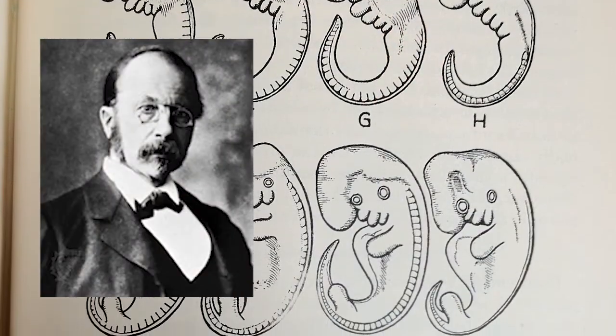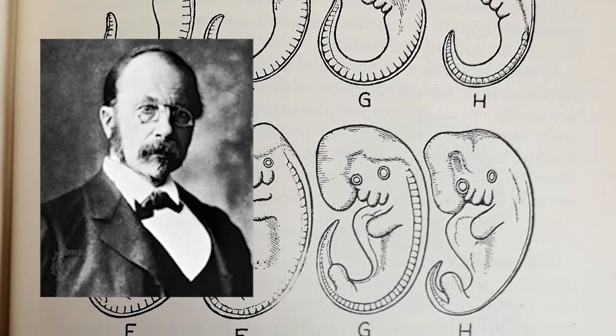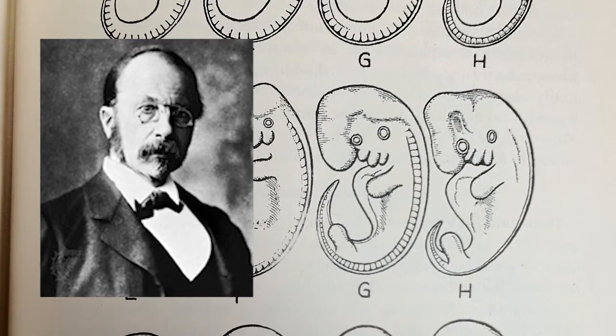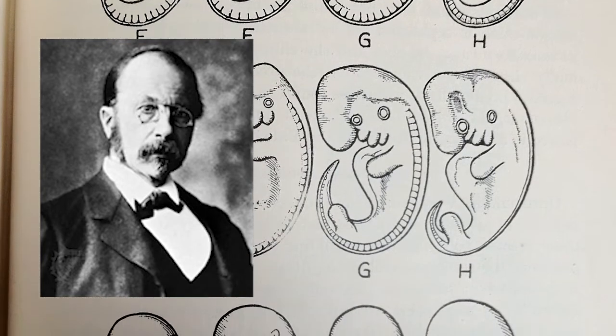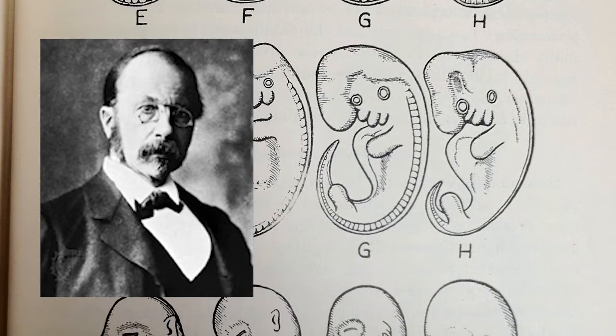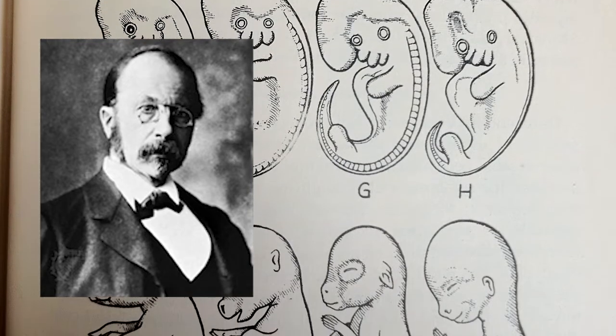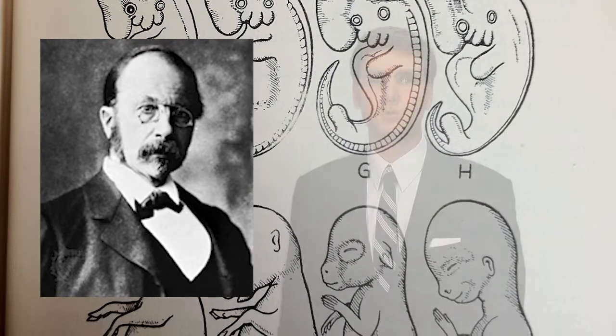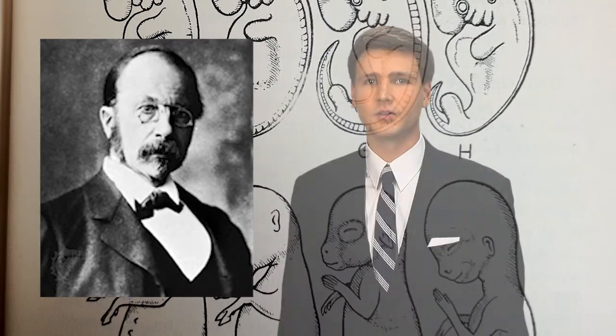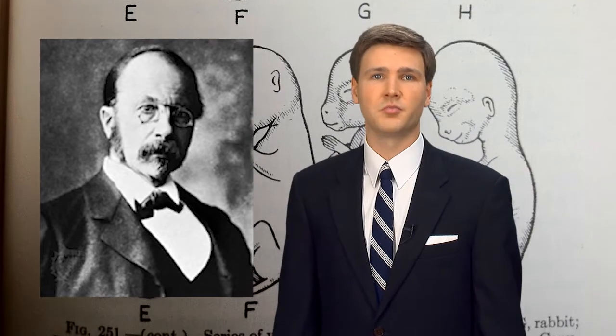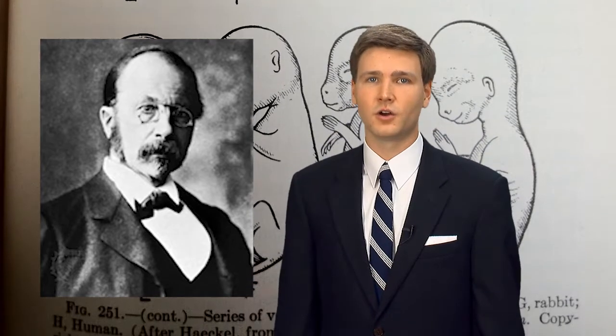Later, in 1874, a German professor by the name of Wilhelm Hiss documented the fact that Haeckel had altered his drawings to show gill slits in an effort to support the theory of evolution. That did not slow the Darwinian evolutionists down at all. They continued to advance the theory of biogenetic law.